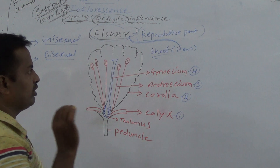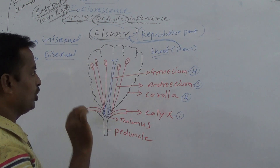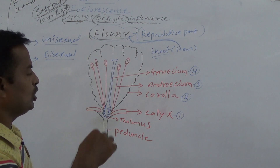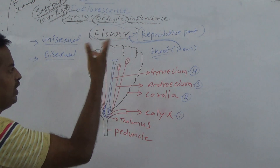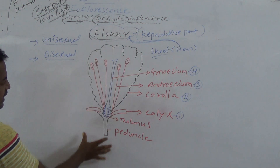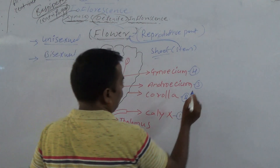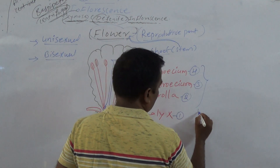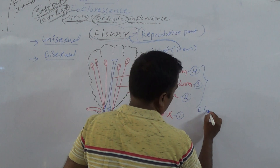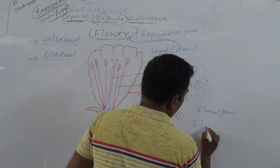Students, the flower is one of the important reproductive parts of the plant. It can modify the shoot. So for which purpose is the plant shoot modified into a flower? For reproduction. Now this is the diagram of the flower. It has mainly four important floral parts — nothing but floral leaves.